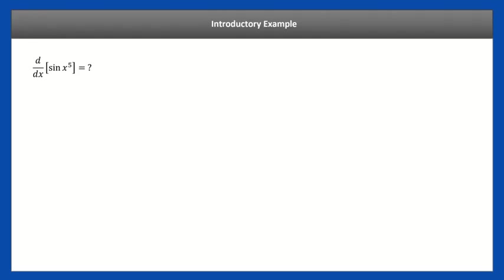Let's look at an example of the chain rule. We have the function sine of x to the fifth, and we want to take the derivative of this with respect to x. If you tried to do this intuitively, you might say the derivative of sine is cosine, so this is cosine of x to the fifth. However, that x to the fifth does make a difference in the derivative. So you'd expect cosine of x to the fifth, but that's actually not the case. To take the derivative of something like this, we need the chain rule.